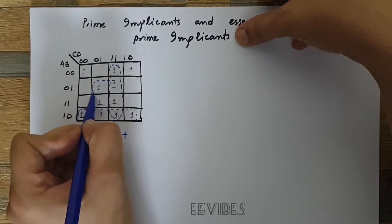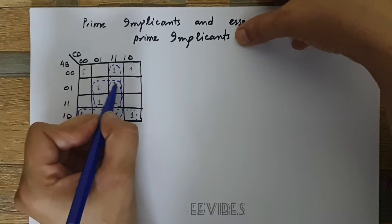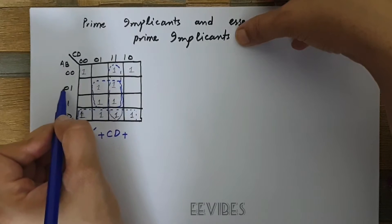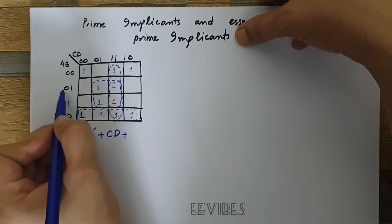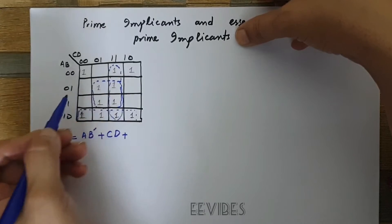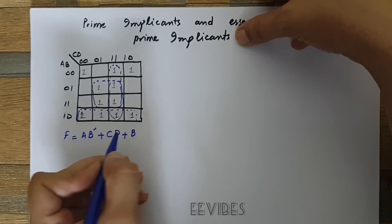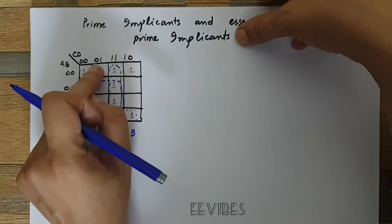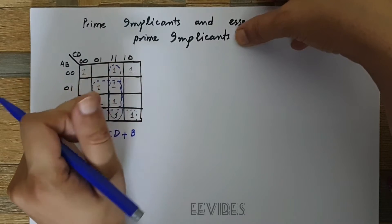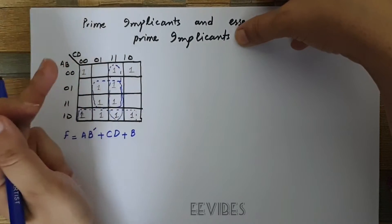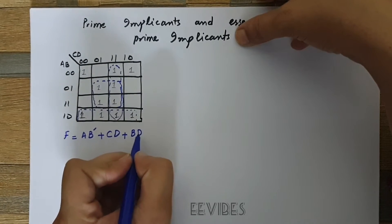The next possible combination covers these four ones. A is changing from zero to one, so we do not write A. B remains as-is with value one, so we write B. Moving from one column to another, C changes from zero to one so we don't write it, and D equals one. So the next term is BD.